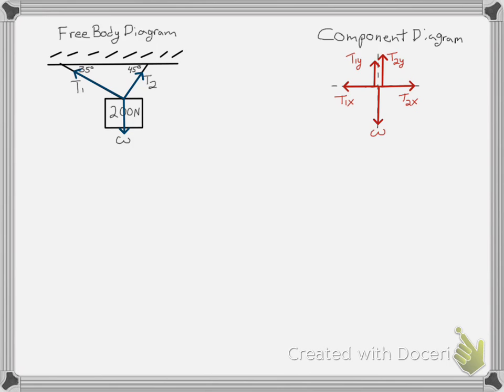The condition that has to be satisfied is that all of the forces must add to zero. In order for that to be true, both the horizontal components and the vertical components must add to zero.